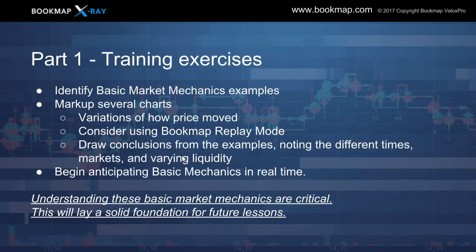For part one training exercises: go back and start to identify these basic market mechanics that we just covered, and start to mark up your charts — the more the better. Look for the variations in how price moved within these examples. Consider using the Bookmap replay mode — it's an excellent way of seeing this data and you can replay it again and again. Start to draw your own conclusions from these examples, noting the different times, different markets, varying liquidity, and the speed of movement. Once you start to comprehend that, you can start to anticipate these mechanics occurring in real time.